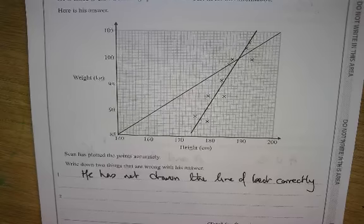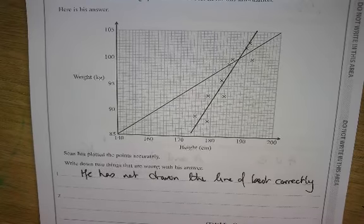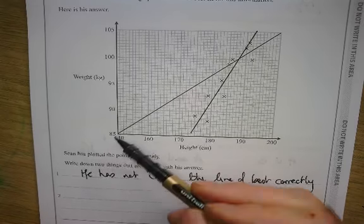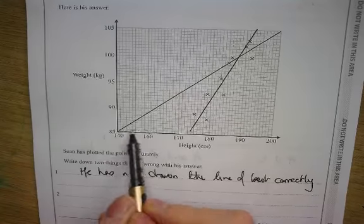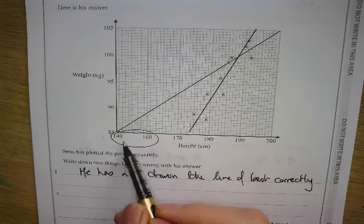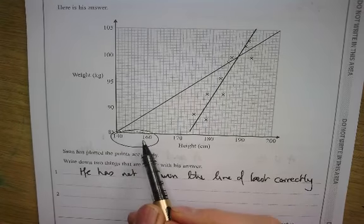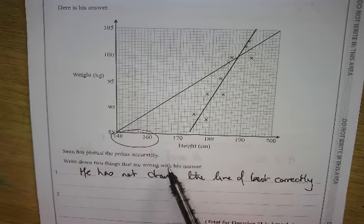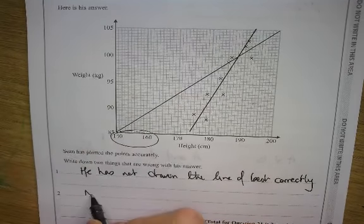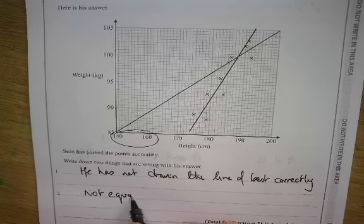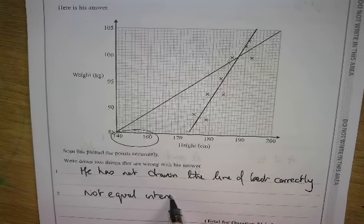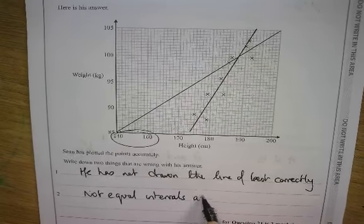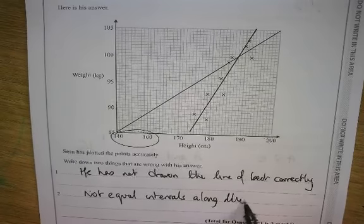And then you always look for axes and different issues here. So you know, this goes up in fives. But look here, look, that should go up in tens. And that hasn't. Has he labelled it correctly? This goes up in five. Yeah. So it's not equal intervals. Not equal intervals along the x-axis.